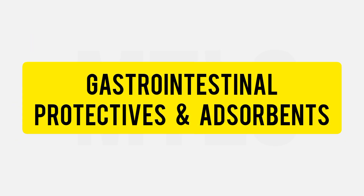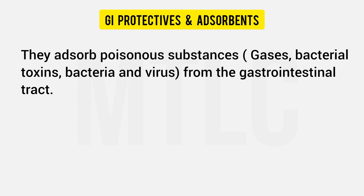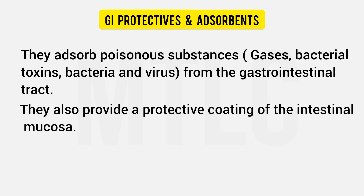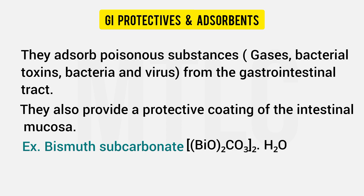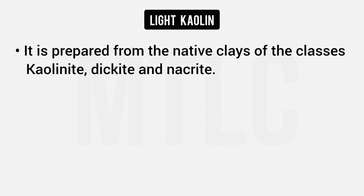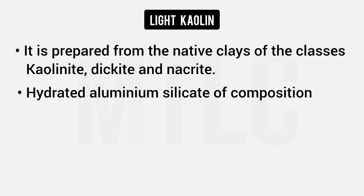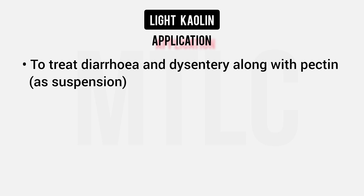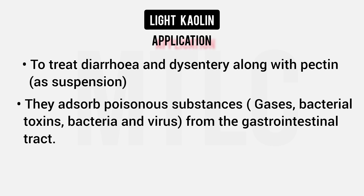The third sub-topic is gastrointestinal protectives and adsorbents. These drugs adsorb poisonous substances, gases, or toxins in the GI tract and provide a protective coating on intestinal mucosa. For example, bismuth subcarbonate (BiO·CO3·H2O), analyzed by gravimetry, is used in diarrhea and dysentery. Light kaolin is a hydrated aluminium silicate (Al2O3·2SiO2·2H2O). It is used in diarrhea and dysentery, often as a suspension with pectin, to adsorb toxins, gases, and bacteria.